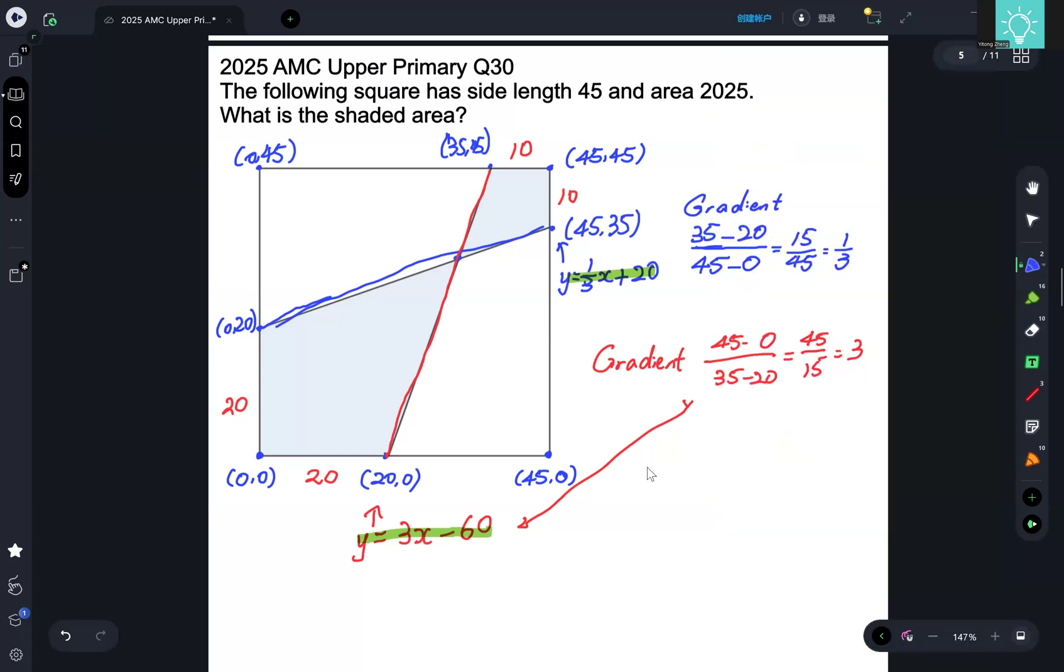So in order to do that, we equate our values of x. A third of x plus 20 equals 3x minus 60. We multiply by 3 to get x plus 60 equals 9x minus 180. And then we can rearrange to get 8x equal to 240. So x is equal to 30.